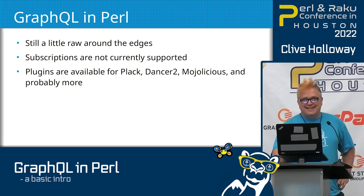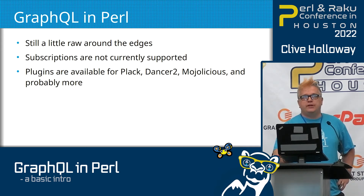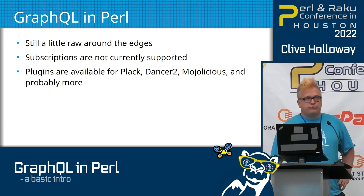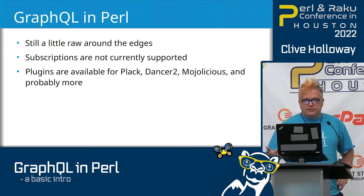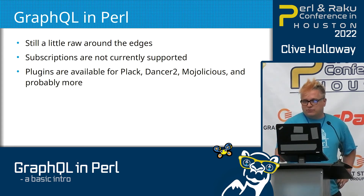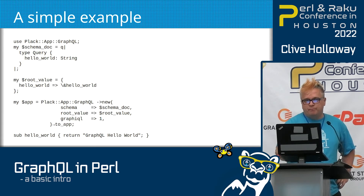GraphQL and Perl — it's definitely a little rough around the edges. I've had trouble with some code that hasn't been touched in four years, so I've been pinging the authors of the two or three CPAN modules that are out there. I've played with the plugins for Plack and DBIx — two modules — they're all pretty similar in the way they implement. I think the best way to go through that is to give you a little example.